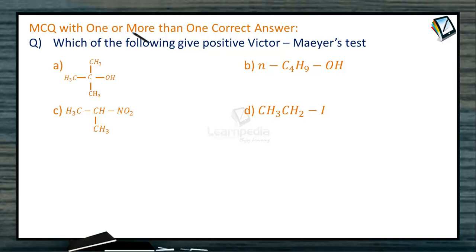Next question, MCQ type: which of the following gave positive Victor-Mayer test? Victor-Mayer test is one of the tests that can be used to differentiate 1° alcohol from 2° alcohol, which in turn from 3° alcohol.